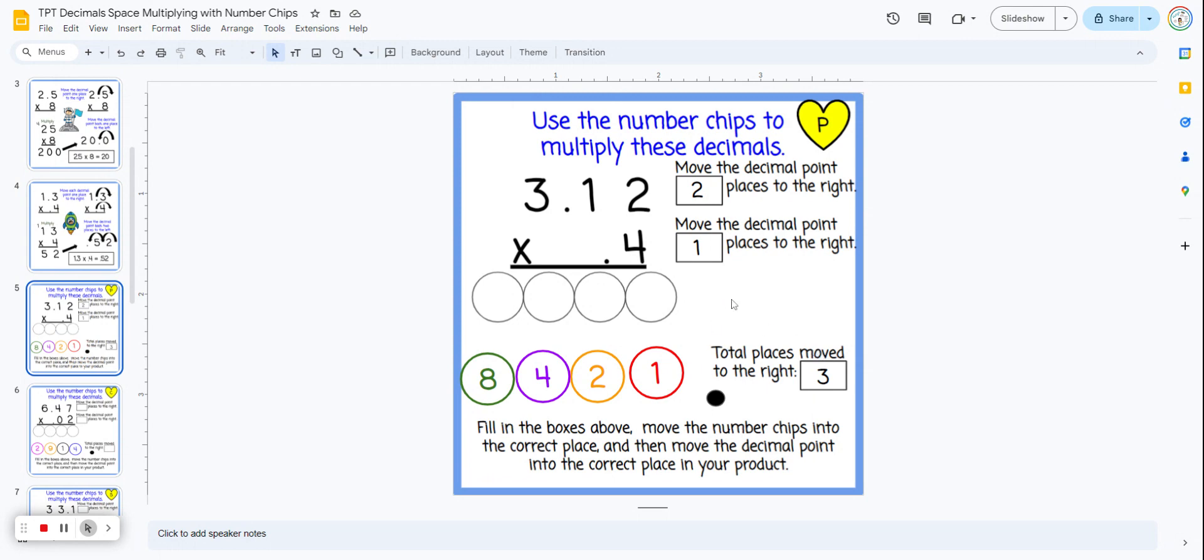Now they're going to move the number chips. It starts out with some fairly simple multiplication and gets more difficult as they go. Here if we multiply four times two, we're going to get eight. So they click and hold on the eight and move it into place. Here we're multiplying as if there were no decimal points and these were whole numbers.